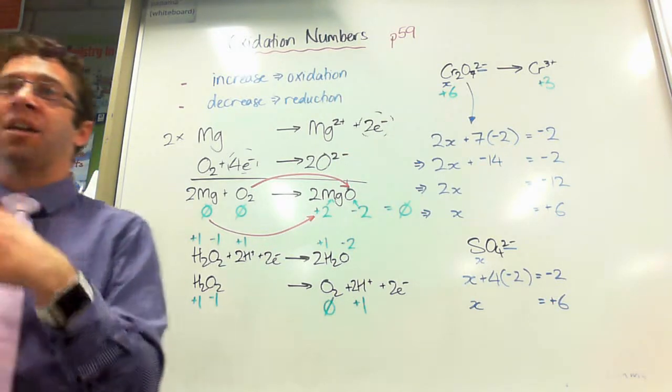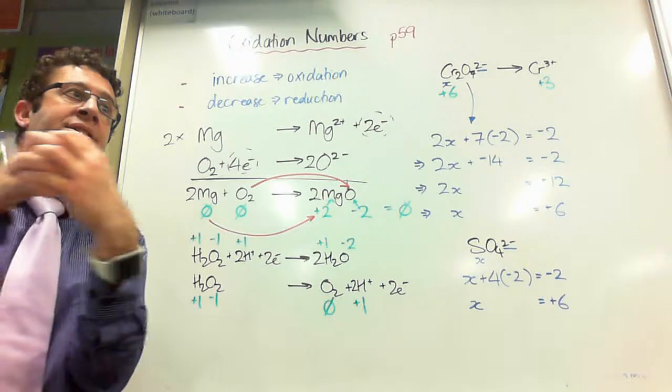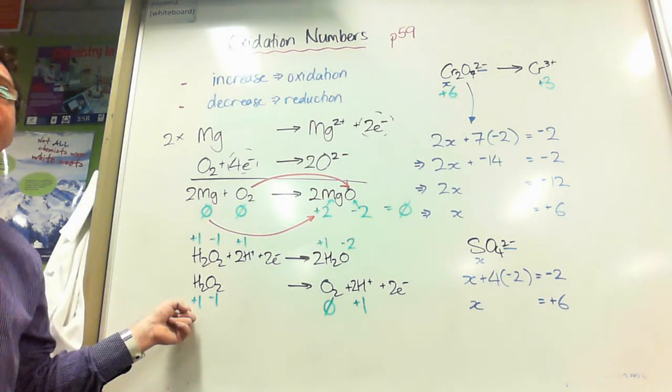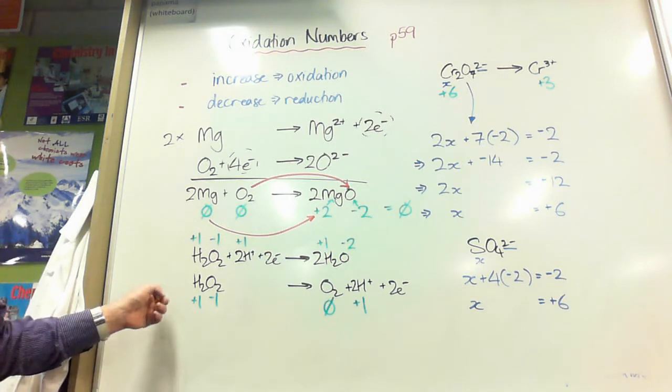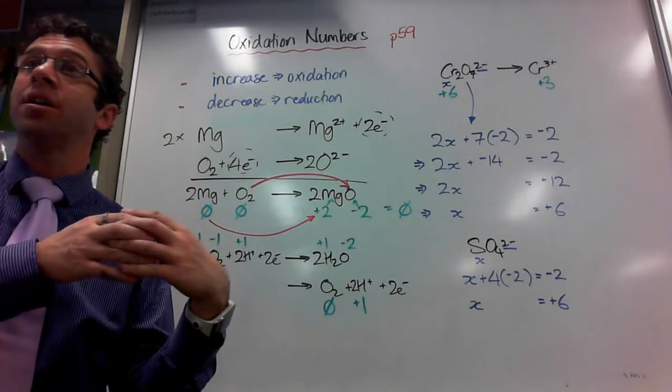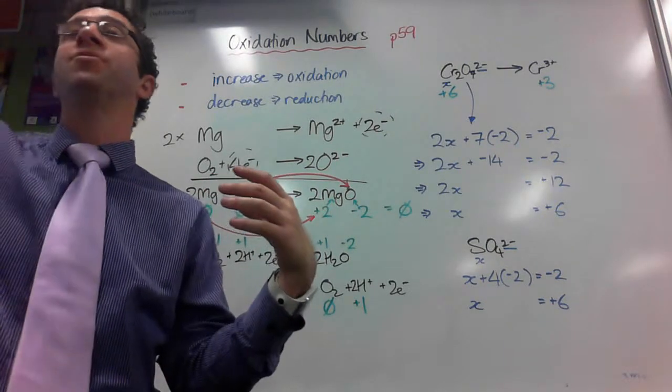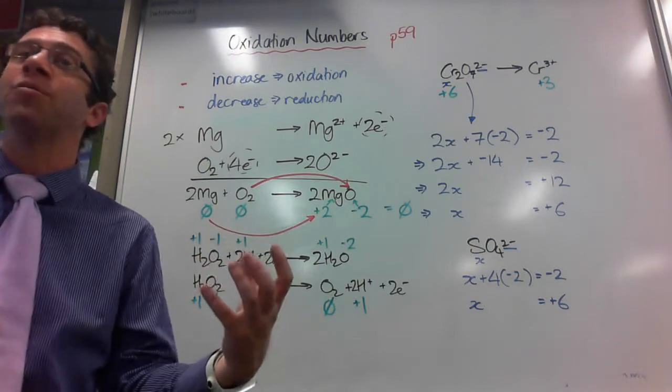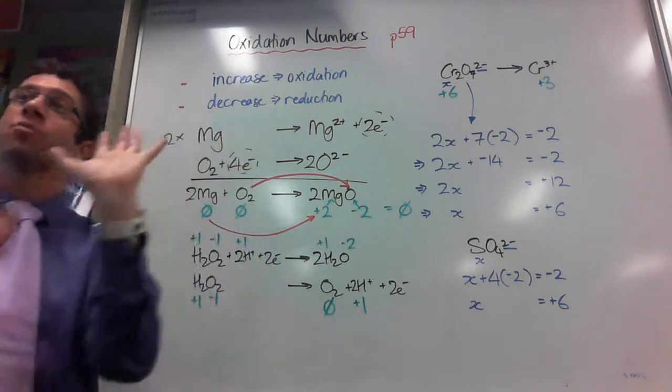Rule number four, which is also a very, very important one. Hydrogen, when it's in an element, sorry, when it's in a compound or an ion, is positive 1. And there is one exception to that, and that's the metal hydrides. So, if you see, for example, lithium hydride, LiH, the rule about monatomic ions comes first. So, lithium would be plus 1, and hydrogen would therefore have to be negative 1. And the reason for that is rule number five.